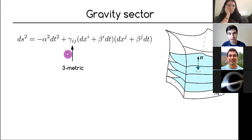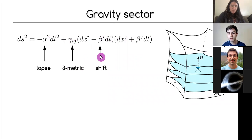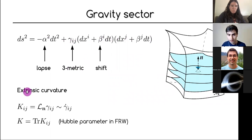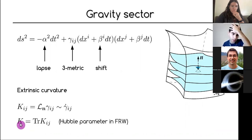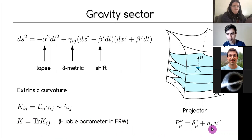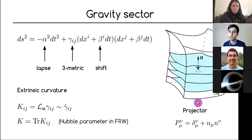In the 3+1 decomposition, γ_ij is the spatial metric intrinsic to the three-dimensional hypersurface, and then we have the lapse and shift which are dynamical gauge conditions. Other relevant quantities include the extrinsic curvature K_ij, which is approximately the time derivative of the spatial metric and encodes how the hypersurface is embedded in the full spacetime. The trace of K_ij gives the expansion, which corresponds to the Hubble parameter in cosmology.